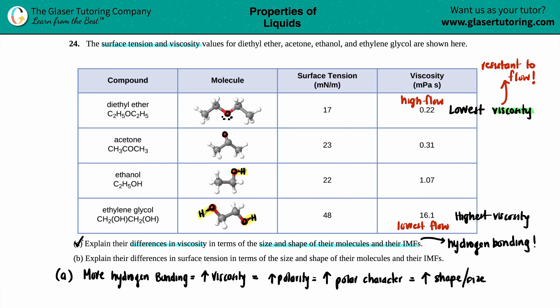Now we have to do the same thing for letter B — explain differences in surface tension in terms of size, shape, and intermolecular forces. Looking at the surface tension column, 17 is the lowest surface tension, leading up to the highest surface tension at the bottom.